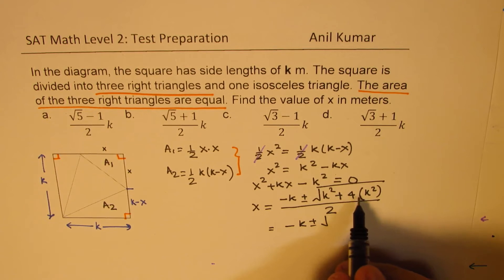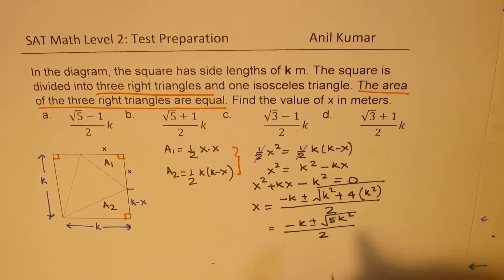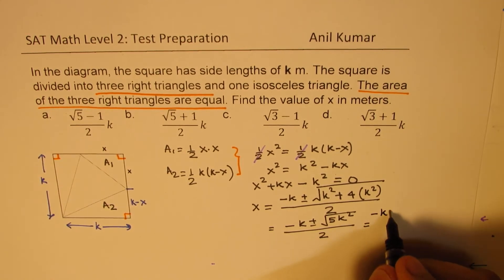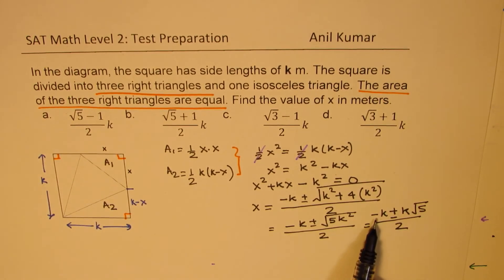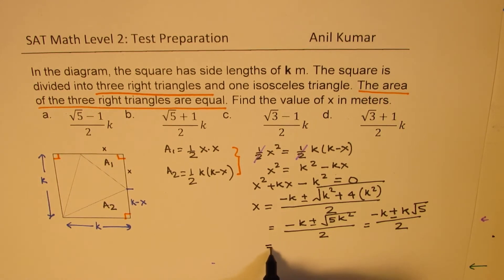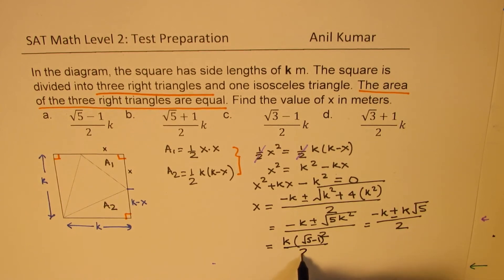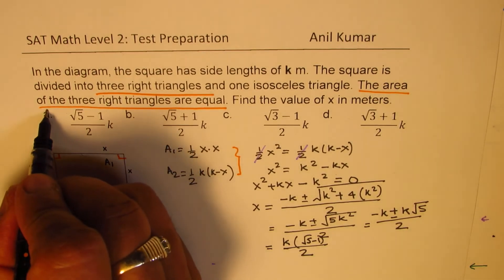Now this is minus k plus minus square root of, well, k plus minus - this is 5k square, right? 4 plus 1, 5k square over 2. So that gives you minus k plus minus k square can come out as k and we have square root of 5 over 2. So clearly we have this as negative and we have square root of 5 times k. So we can now write this as k times square root of 5 minus 1 over 2. So that matches with option A.